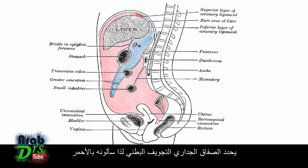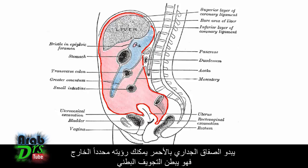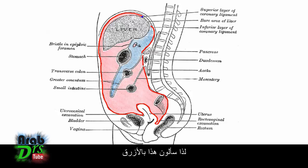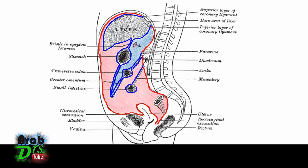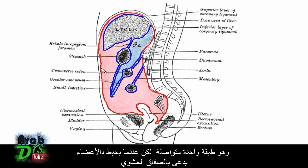I'm going to draw the parietal peritoneum on in red. You can see the parietal peritoneum in red lines the outside of the abdominal cavity. Then where the peritoneum surrounds the viscera — the organs within the cavity — it's called the visceral peritoneum. I'm going to draw this on in blue. So now we've got the red parietal peritoneum and the blue visceral peritoneum. It's one continuous layer, but where it surrounds the organs it's called the visceral peritoneum.